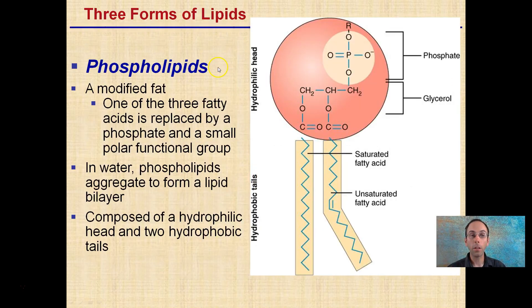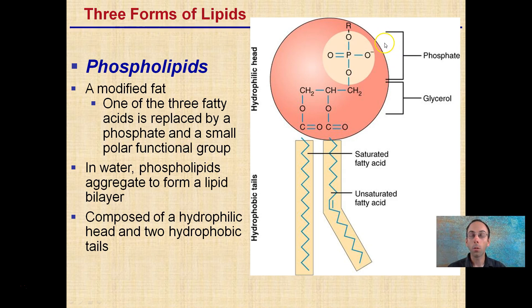So a phospholipid in general is a modified fat. One of the three fatty acids is replaced by a phosphate and a small polar functional group. This polar portion is what makes it hydrophilic, meaning it likes water, in comparison to the lipid portion — the hydrophobic tails.